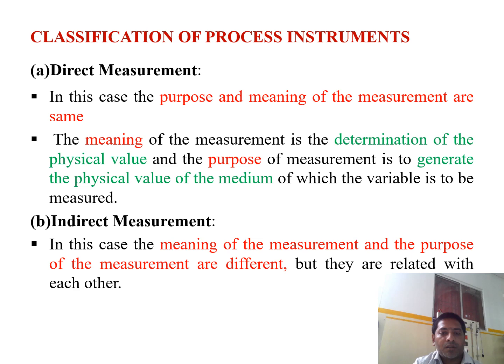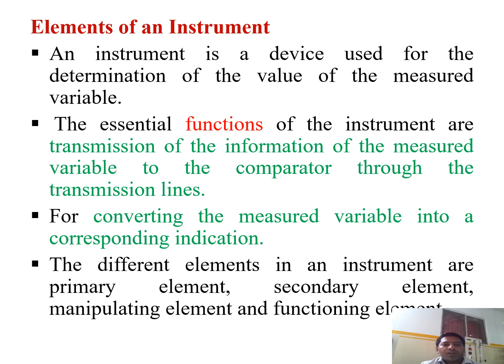In indirect measurement, the meaning of the measurement and the purpose of the measurement are different but they are related with each other. An instrument is a device used for determining the values of measured variables. The essential function of the instrument is transmission of the information of the measured variable to the comparator via transmission lines.